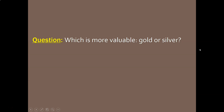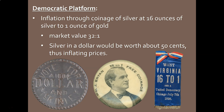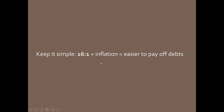Which is more valuable, gold or silver? Obviously gold. Here is how the Democrats planned to inflate the currency: they would put silver dollar coins into circulation at a ratio of 16 ounces of silver to one ounce of gold. But the market value of gold was 32 ounces of silver to one ounce of gold — which means there was only about 50 cents worth of silver in those dollars, making the currency worth less and causing inflation. So when you see '16 to 1' in the context of the election of 1896, just remember: 16 to 1 equals inflation, which makes it easier to pay down debt, benefiting debtors and farmers.